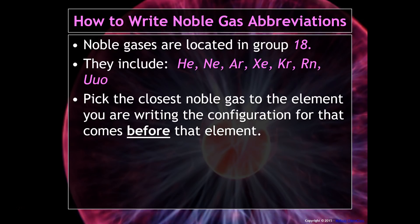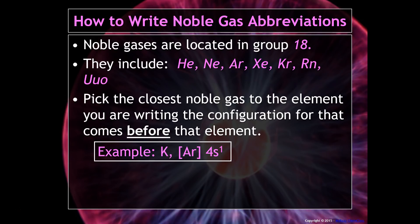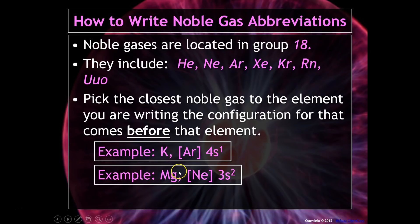You pick the closest noble gas to the element you're writing the configuration for that comes before that element. For example, if you were to write the configuration for potassium, the closest noble gas without going over the number of electrons potassium has is argon. You write the noble gas abbreviation by putting argon in brackets — that accounts for 18 electrons — and then write 4s1, which accounts for potassium's 19th electron.